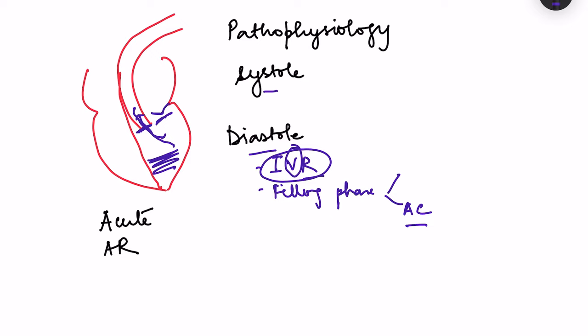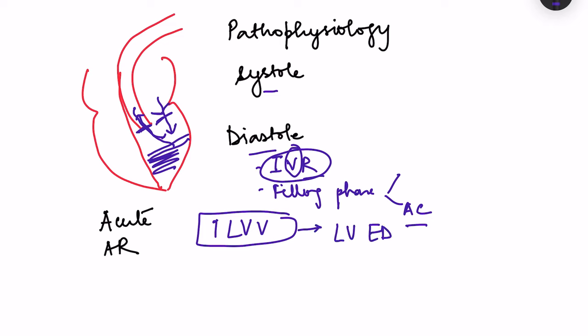In diastole, blood is coming from two sources — the left atrium and the aorta — so left ventricular volume increases. The volume present at the end of diastole is the left ventricular end diastolic volume (LVEDV). Normally LVEDV is around 130 ml, but in aortic regurgitation it can reach 180 ml. This increase in LVEDV also leads to an increase in stroke volume.